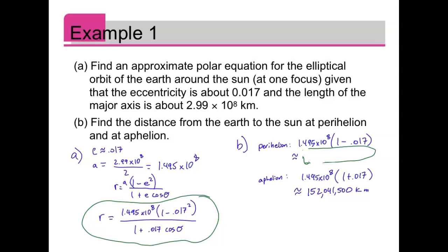All right, so the value should actually be for the perihelion 1, 4, 6, 9, 5, 8, 5, 0, 0. All right, so 146, almost 147 million kilometers.